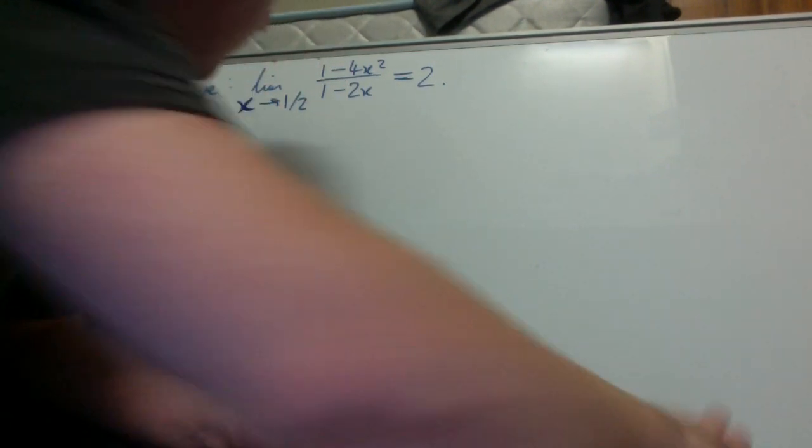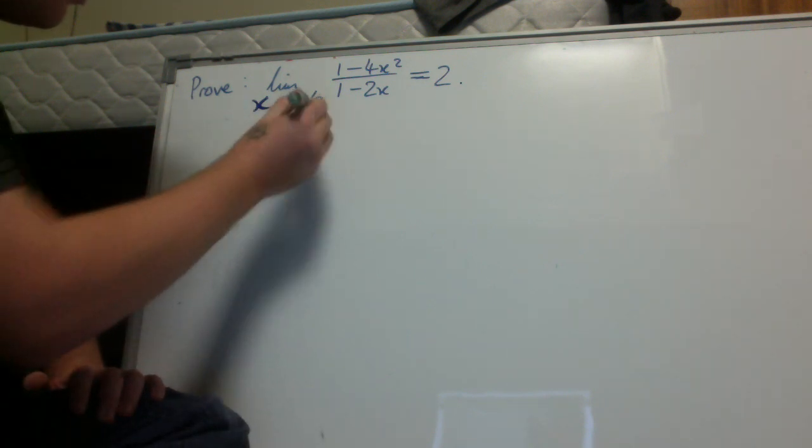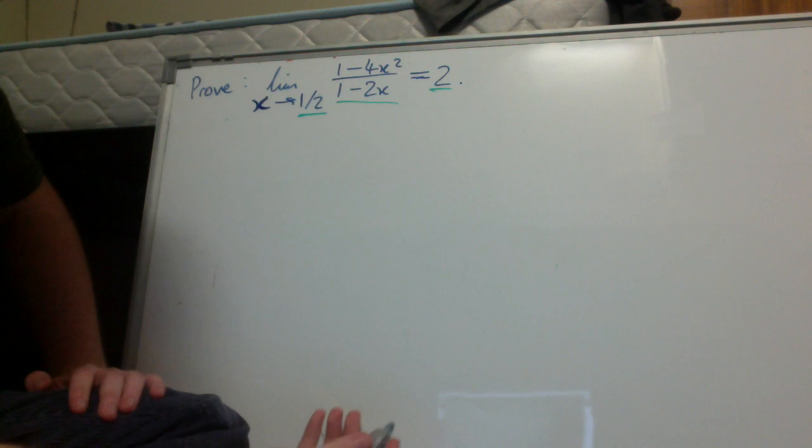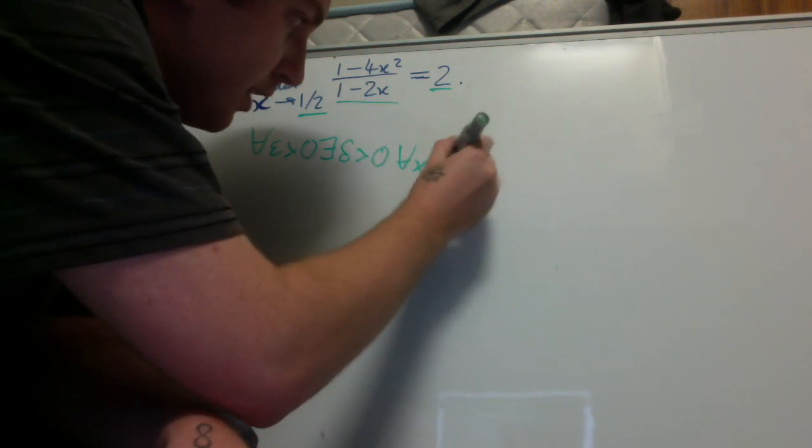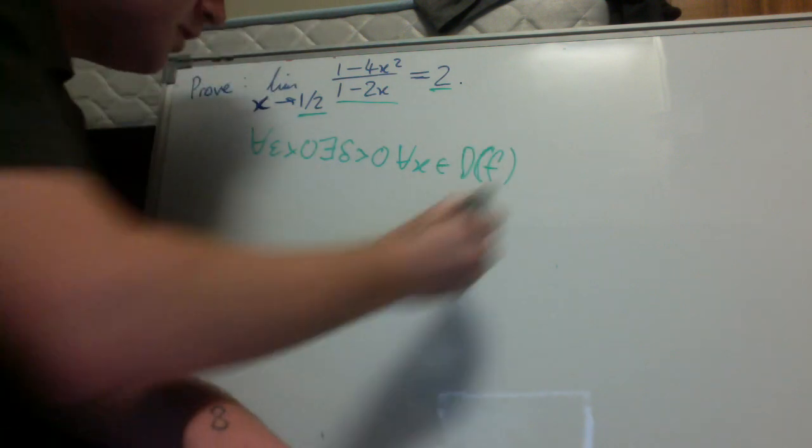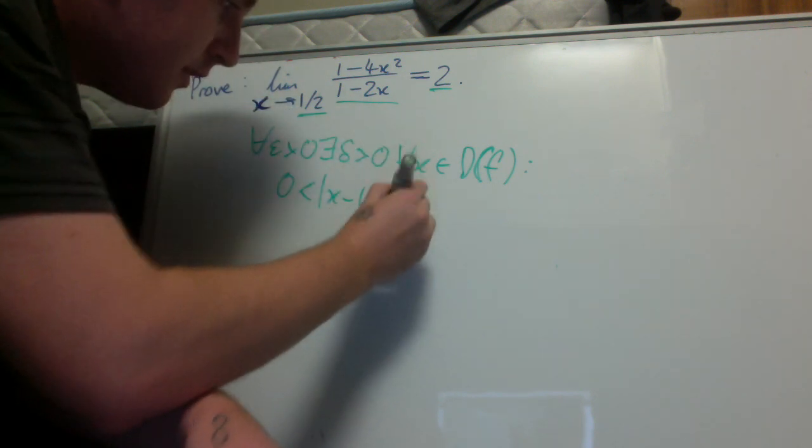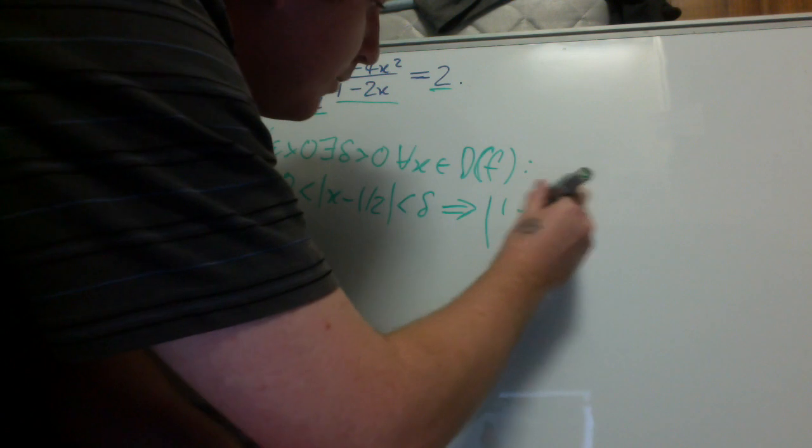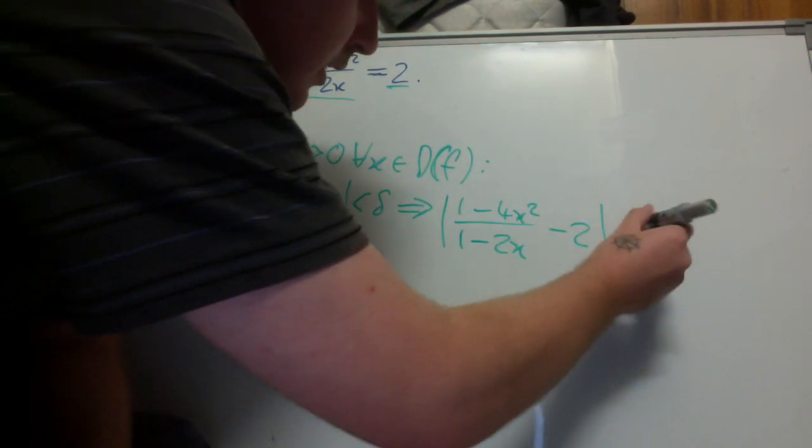The first thing you should do when you approach an epsilon-delta proof is substitute the value x is tending to, the function, and the limit straight into the definition. For epsilon greater than zero, there exists delta greater than zero, for x in the domain of f, zero less than x minus one-half less than delta implies the function minus limit: |1 - 4x² / (1 - 2x) - 2| is less than epsilon.